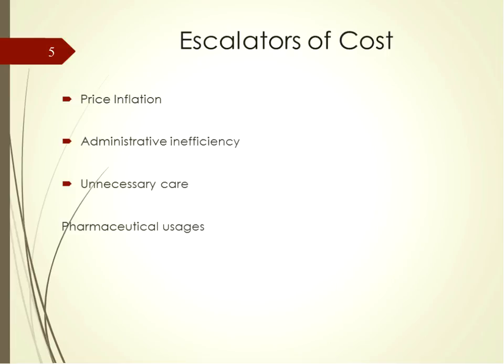Administrative inefficiencies are largely related to the number of clerical personnel it takes to process reimbursement from multiple payers. Some healthcare leaders advocate eliminating insurance, and thus the middle man, so that people are dealing directly with each other rather than through a third party that influences the choice of actual practices and payments of services. U.S. hospitals spend an average of 20% of their budgets on billing administration.